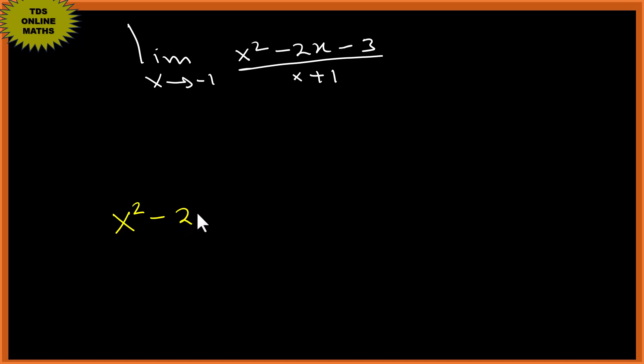minus 2x minus 3. So we have 1 times negative 3 here. Let's find two numbers that multiply to give us this, but when we add them give us negative 2.